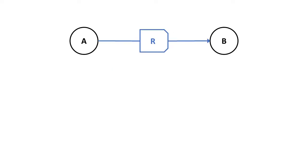In memetics, all knowledge is broken into units called memes. A meme states that some A has some relation R to some B. For example, Alice's uncle is Bob: A is Alice, R is Uncle, and B is Bob.